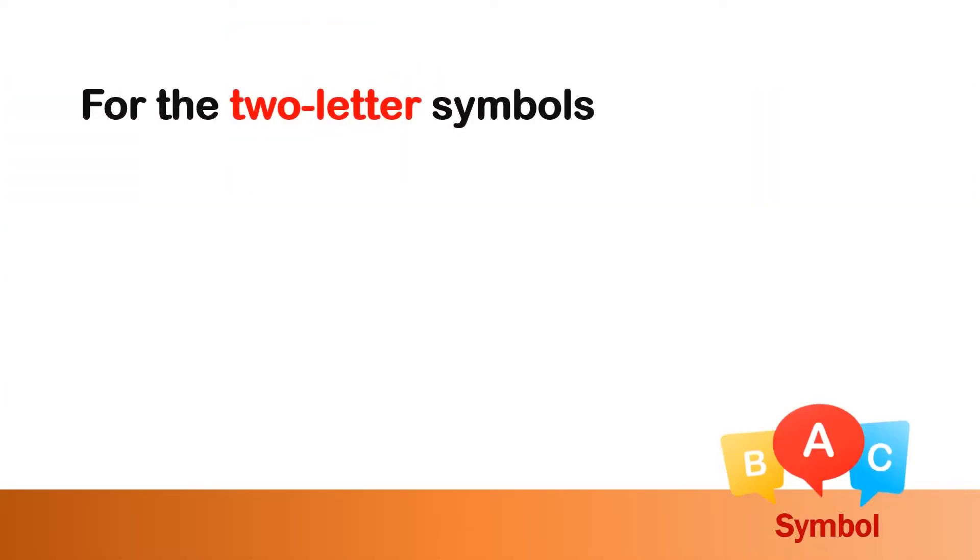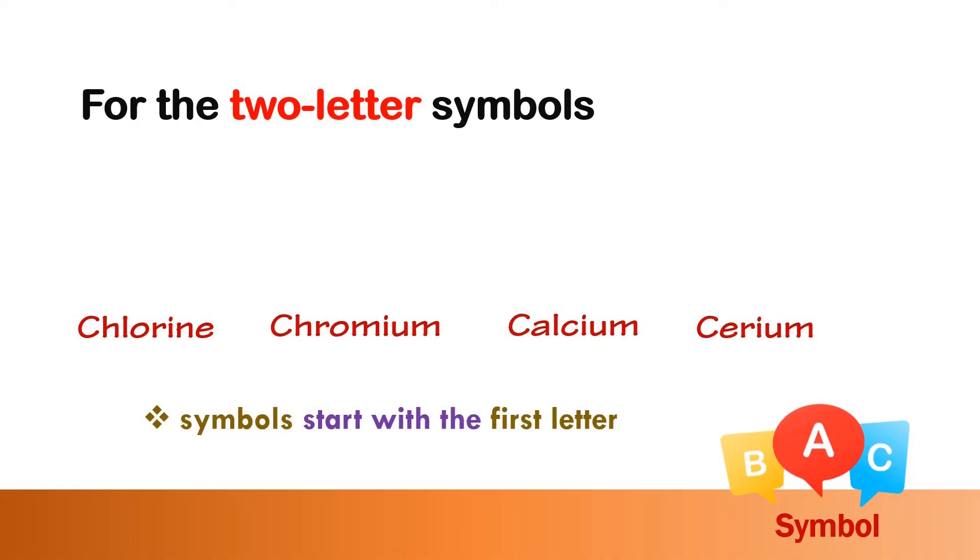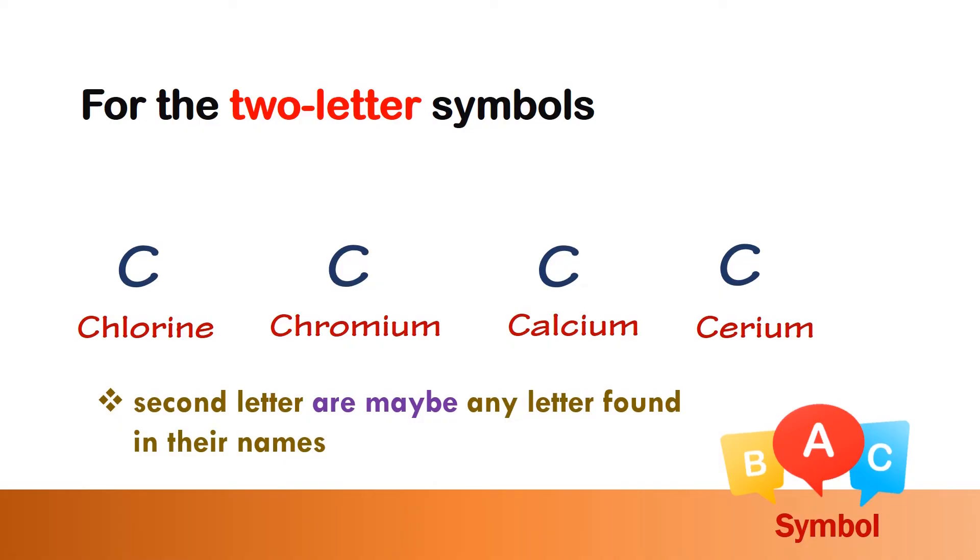For two-letter symbols of elements like chlorine, chromium, calcium, and cerium, their symbols start with the first letter of their names, and the second letters are maybe any letters found in their names.